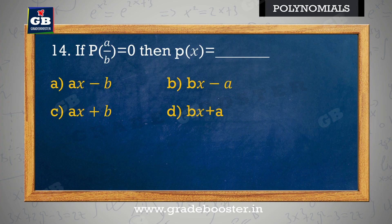If p(a/b) = 0, then p(x) is equal to: a) ax − b, b) bx − a, c) ax + b, d) bx + a.